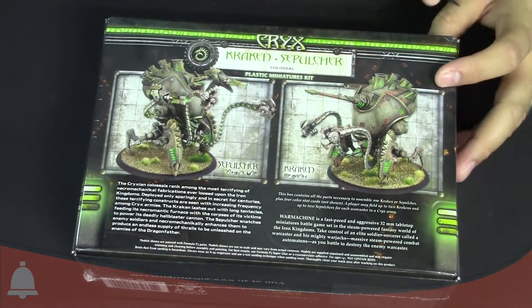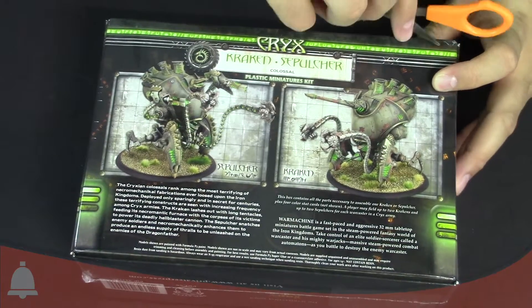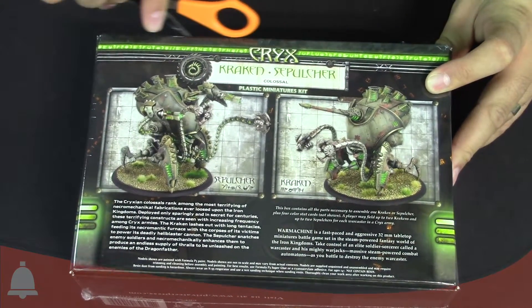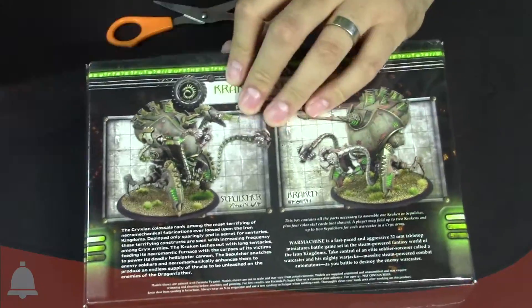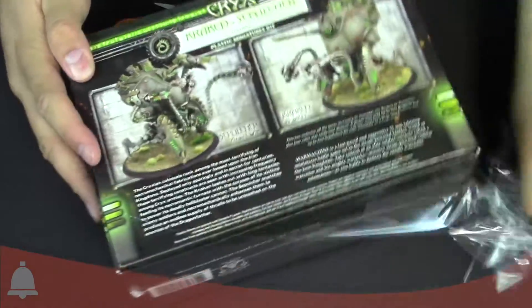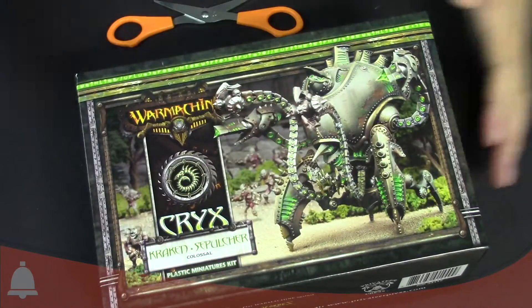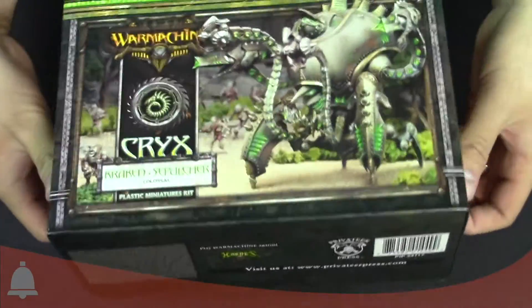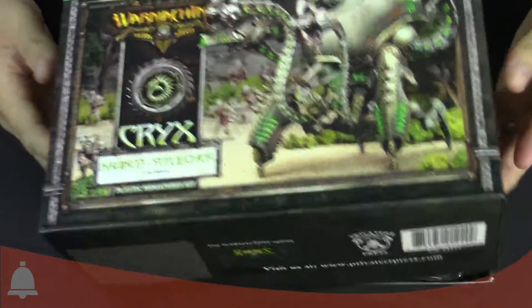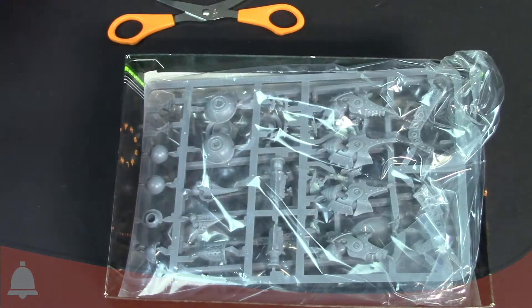I got my handy dandy scissors. Let's go ahead and open this bad boy up. This is a big old box, obviously, and pretty excited. It's plastic, this box is a lot lighter than it probably looks on camera. So we're gonna go ahead and open this on up. Here we go, what's inside the box.